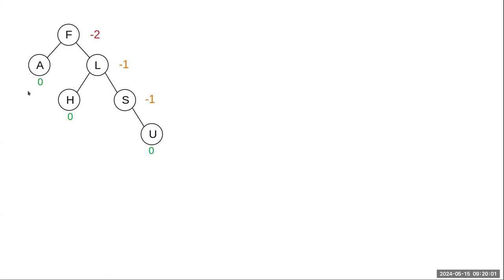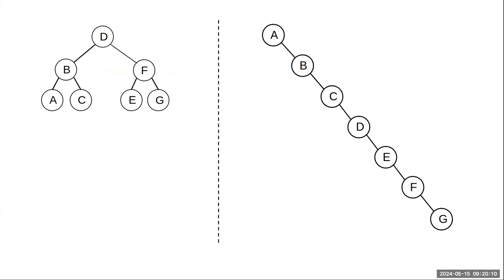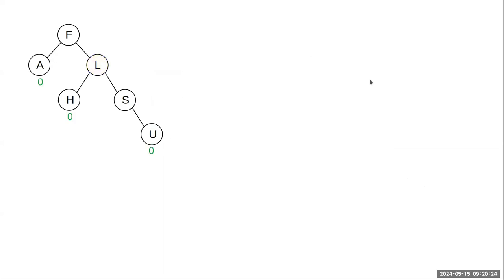That means we're out of balance — but not tremendously badly. Whereas when we go back to this other tree, we've got a balance factor at the root of negative seven, which is just awful. So this is how we can tell how well balanced something is, and what we would like to have ultimately is a tree where nothing has a balance factor outside of zero or one for all the nodes.